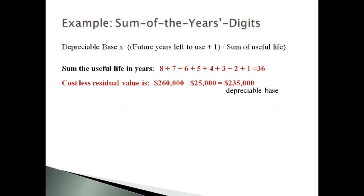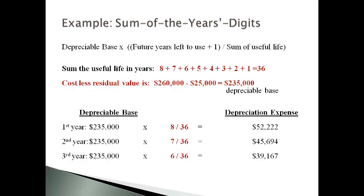The last method is the sum of the years' digits. The cost less residual value — the depreciation base — is multiplied by the fraction related to each year, and the fraction decreases with each year the asset is used. Over the 8-year life, the fractions will add up to 36 over 36, and 100% of the depreciable base will be expensed.